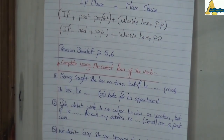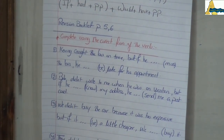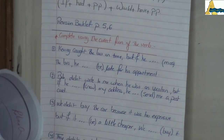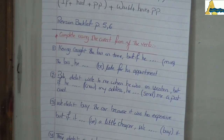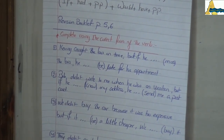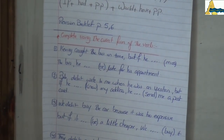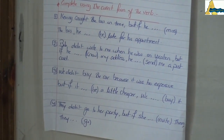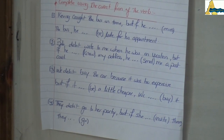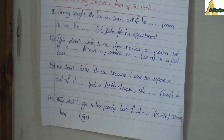In number one, he caught the bus on time. But if he had missed the bus, he would have been late for his appointment. In number two, Bob didn't write to me when he was on vacation. After 'if' we use past perfect, so: if he had known my address, he would have sent me a postcard. In number three, we didn't buy the car because it was too expensive. But if it had been a little cheaper, we would have bought it. In number four, they didn't go to her party. But if she had invited them, they would have gone.